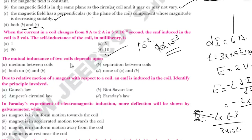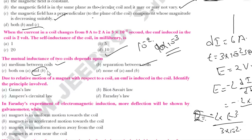Question 18: Mutual inductance of two coils depends upon which factors? Options: medium between the coils, separation between the coils, both A and B, or none. Mutual inductance depends on permeability of the core, number of turns, cross-sectional area, and separation between coils. Since medium between the coils and separation are given as options, both are correct — answer is C.